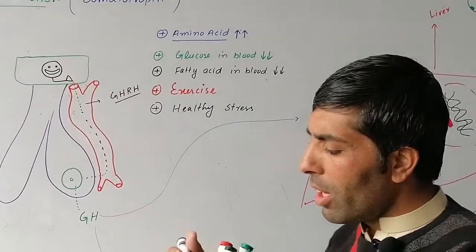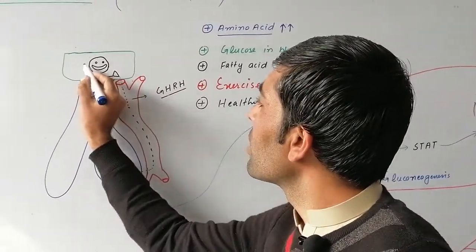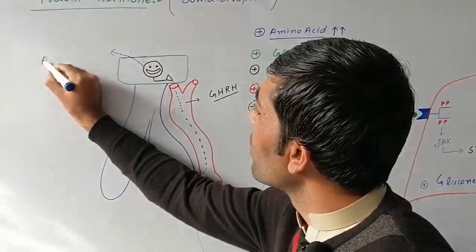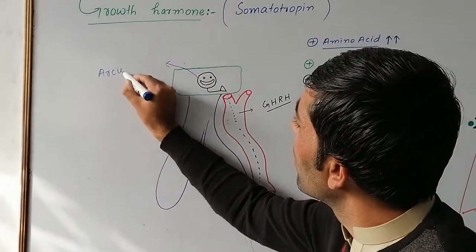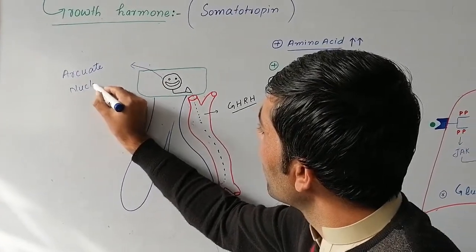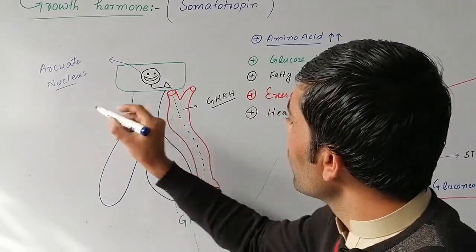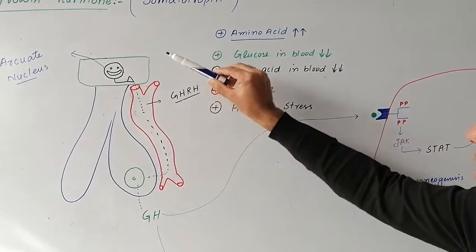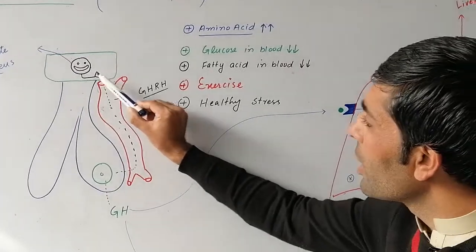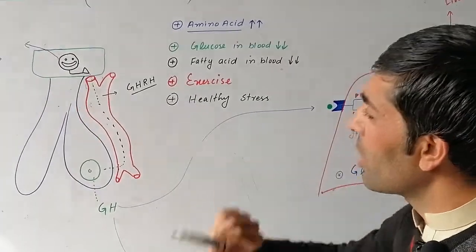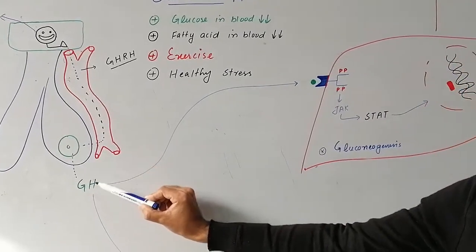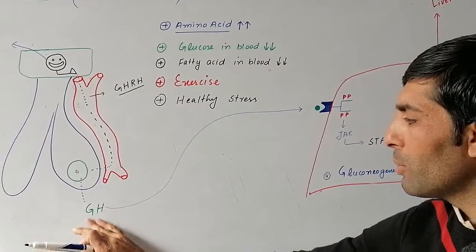It is regulated by the hypothalamus, specifically the arcuate nucleus. The arcuate nucleus triggers growth hormone releasing hormone, which through circulation reaches the anterior pituitary to stimulate growth hormone secretion.